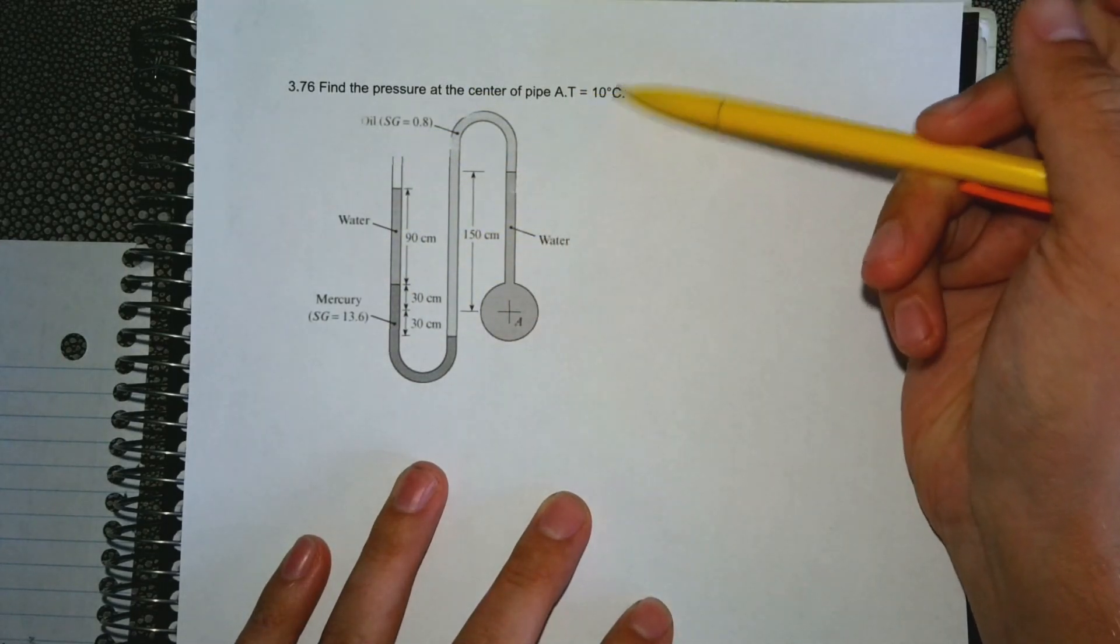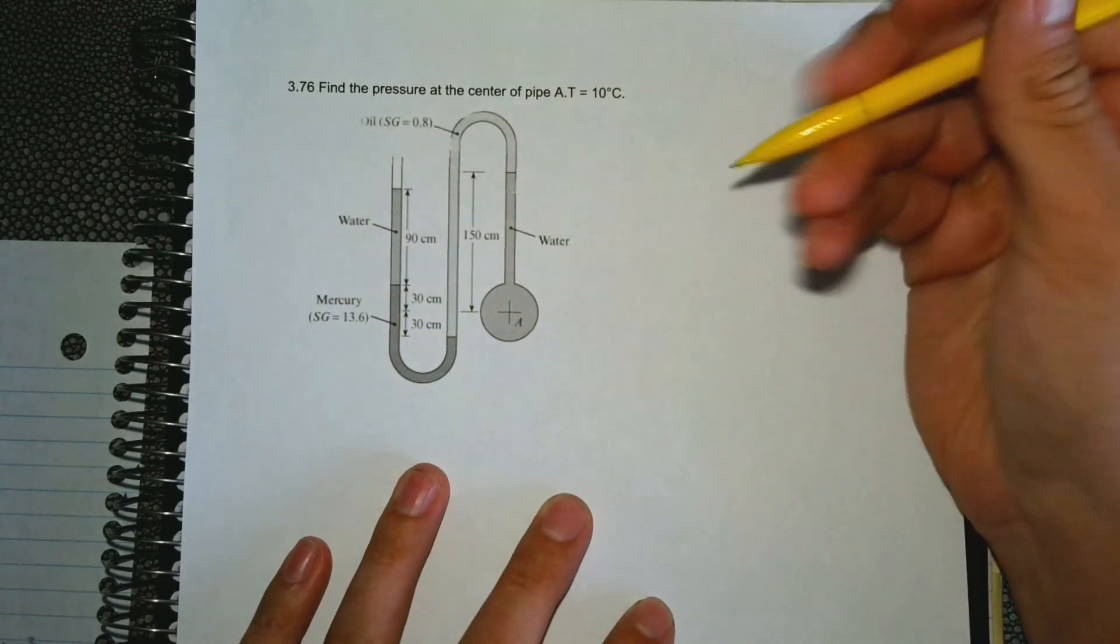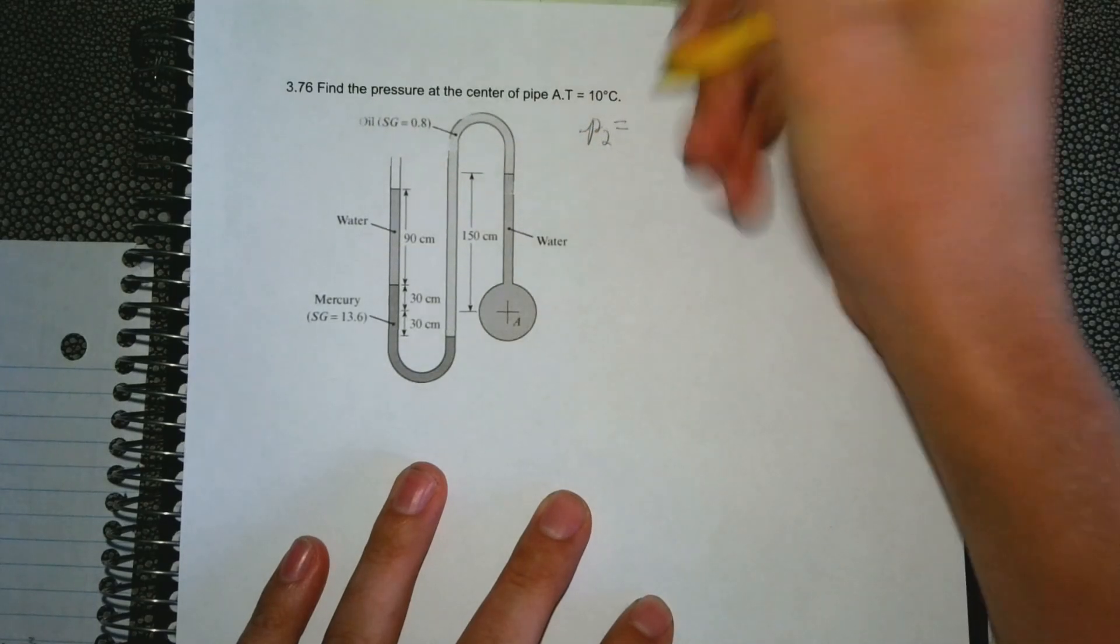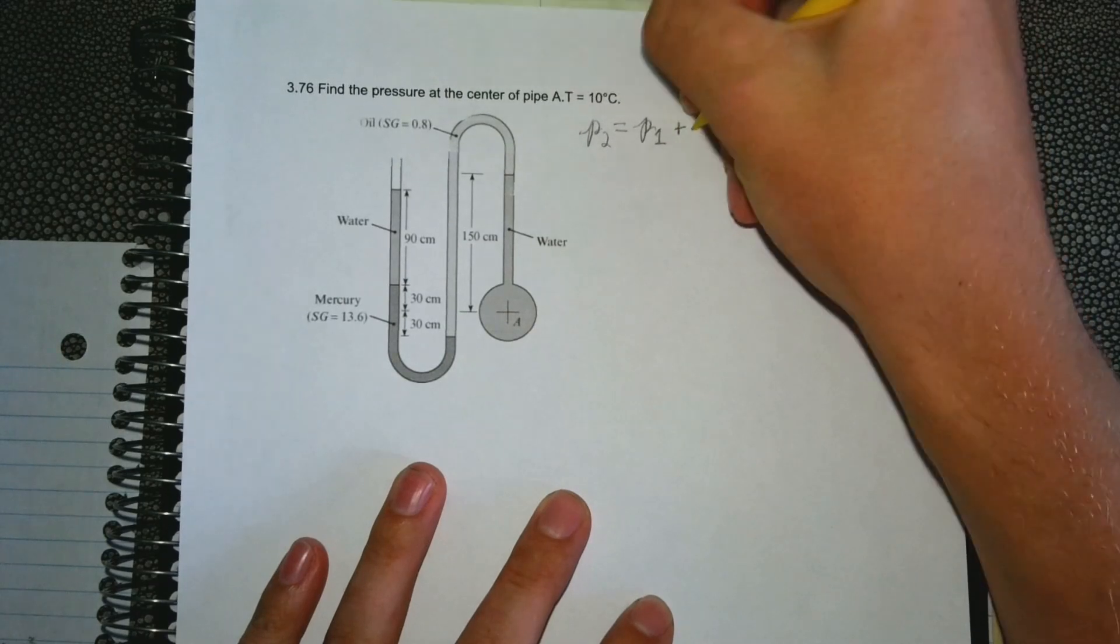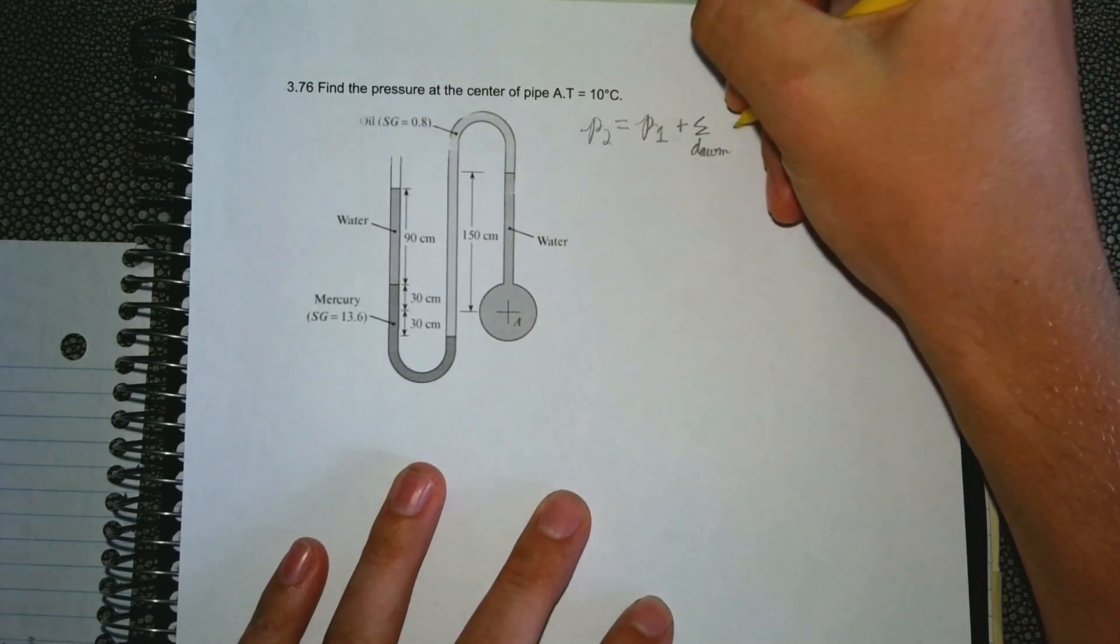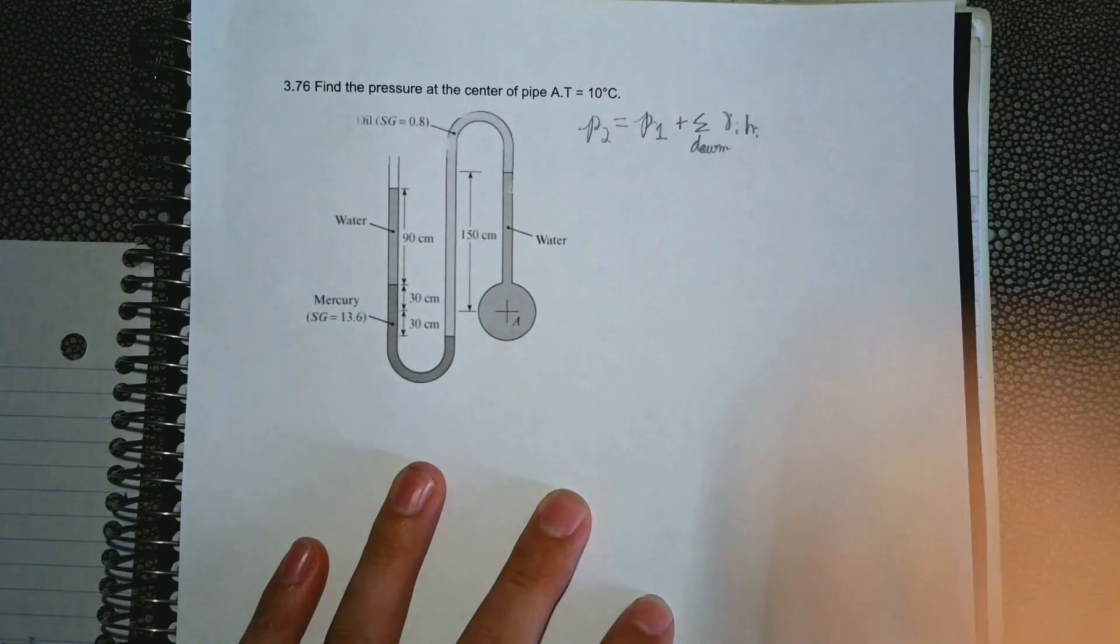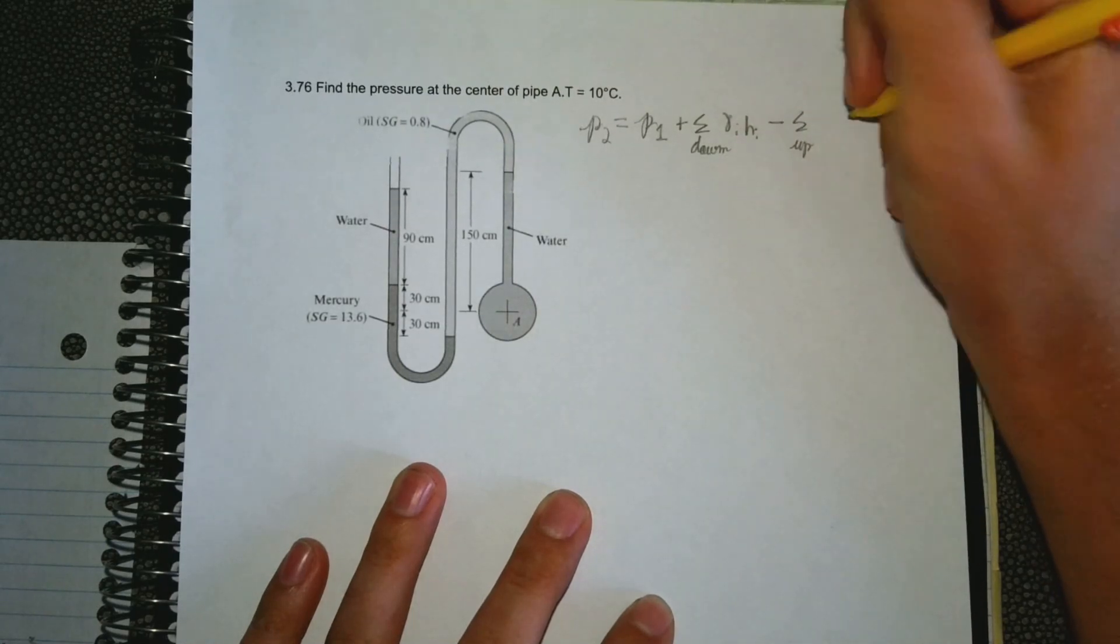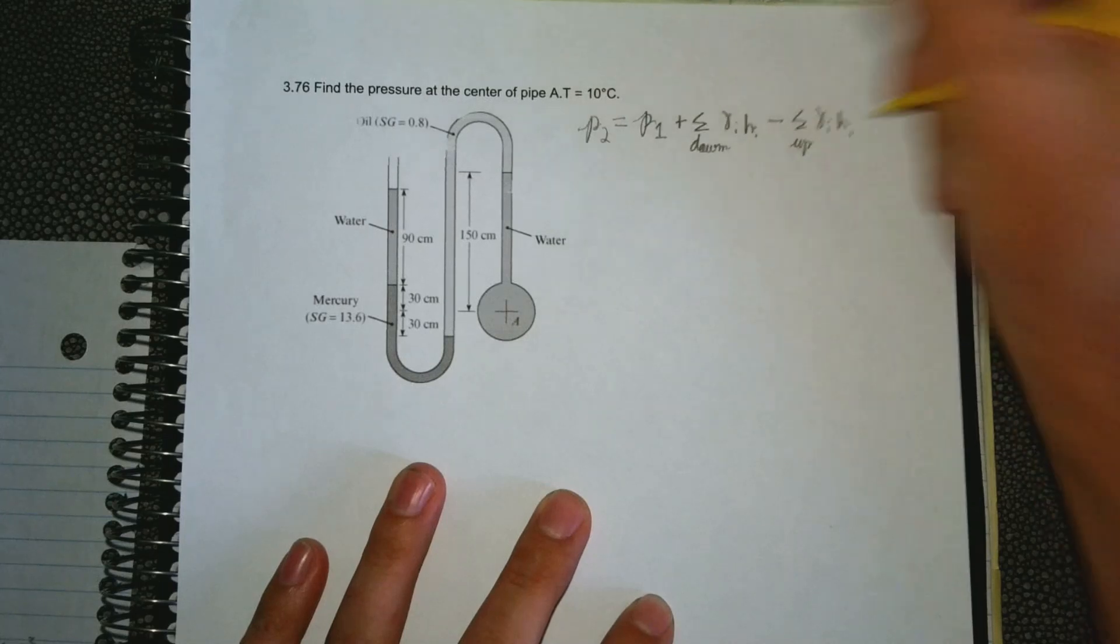We need to be utilizing this formula: P2 equals P1 plus summation of everything going down, specific weight of the liquid times the height of the liquid, and subtract the summation of everything going up with the specific weight of the liquid times the height.